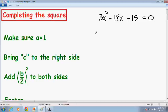So here we have 3x squared minus 18x minus 15 equals 0. And I wrote the steps for you in green on the left hand side of the screen. And the first step is to make sure that a equals 1. Your a is always the number in front of the x squared term. So our a right now is 3. We got to make sure that our a is equal to 1.